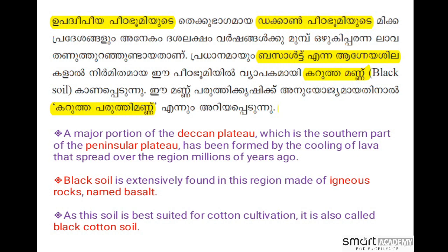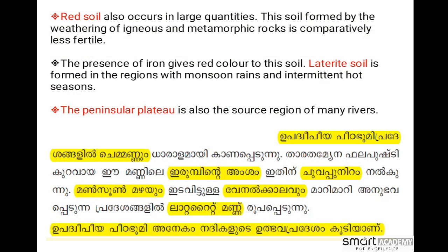Red soil also occurs in large quantities. This soil is formed by the weathering of igneous and metamorphic rocks and is comparatively less fertile. The process of iron oxidation gives the red colour to this soil. Laterite soil is formed in this region with monsoon rains and mid-hot season.